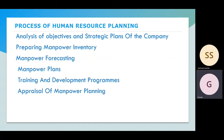Next is the process of human resource planning. The first step is analysis of the objectives and strategic plan of the company — the goals and strategy of our company, considering how many persons are available and how many we need. The second step is preparing the manpower inventory, which is a stock count of existing manpower.